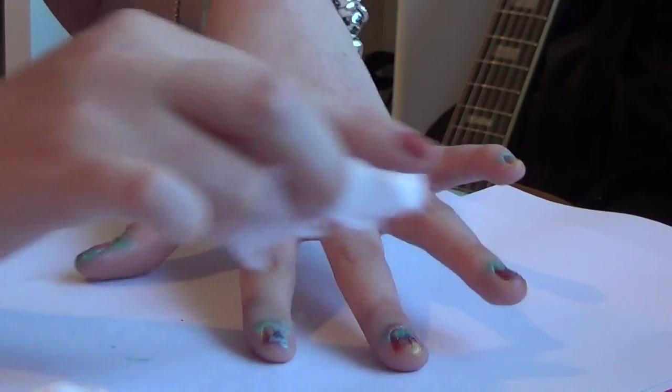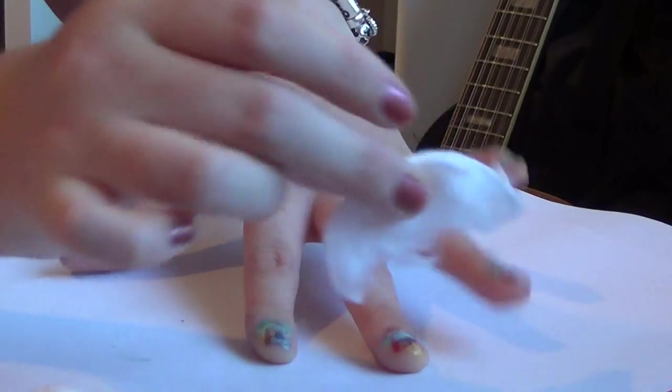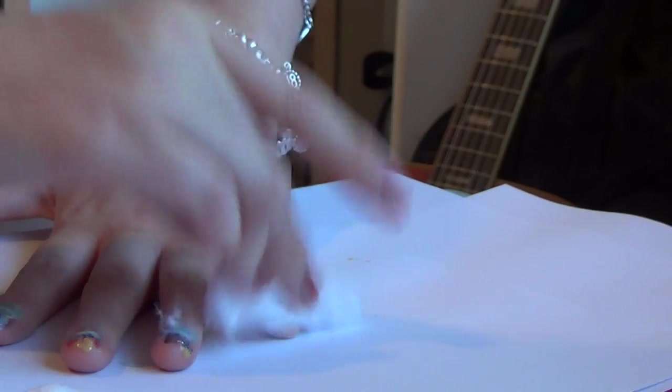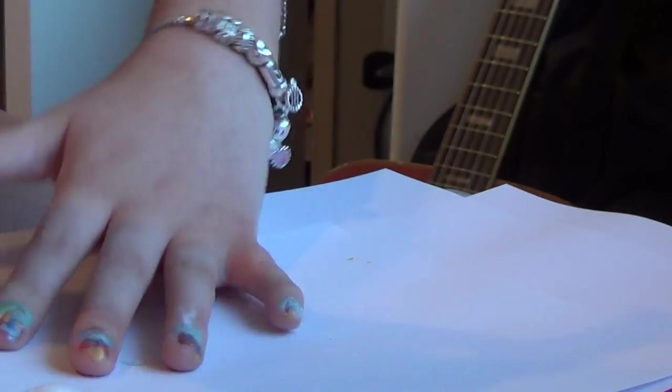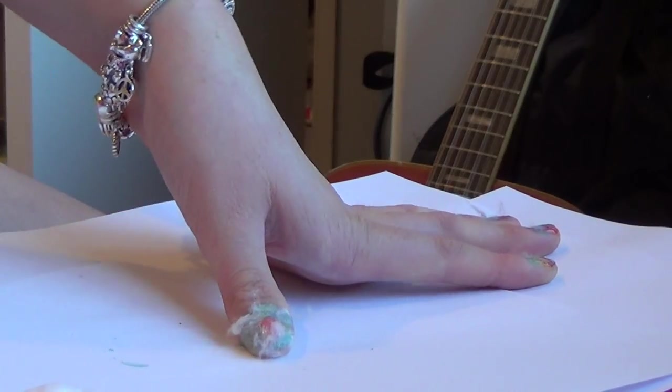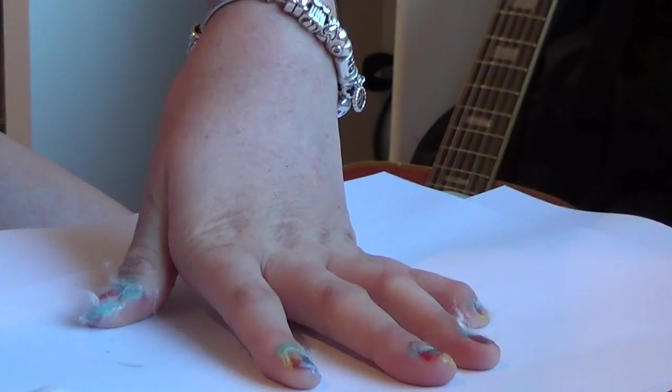And you're just going to press on it, like so. Just press the fuzzy side of the nail onto. And this gives it even more texture than the glitter or sugar nail polish does. So yeah, that is my finished nail look.